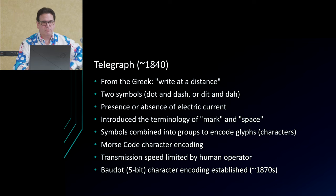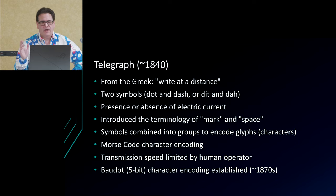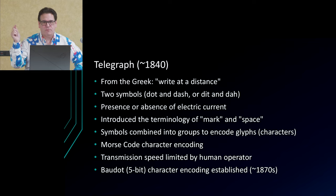The telegraph — from the Greek 'writing at a distance' — is basically an electrical current transmitted over a wire representing one of two symbols. The presence or absence of the current indicates either a mark or space. The electrical current would cause a needle to write a mark on paper tape, and the tape would advance — so the needle was either marking or making a space.